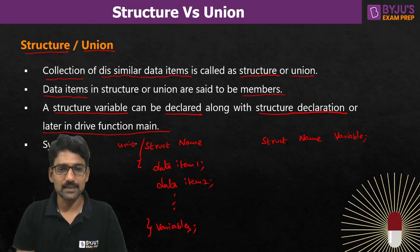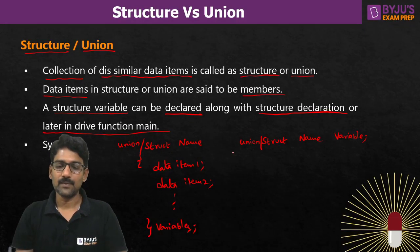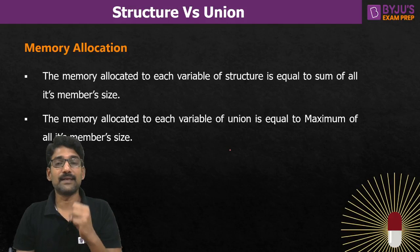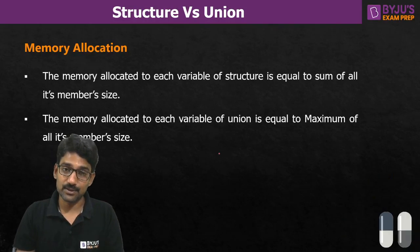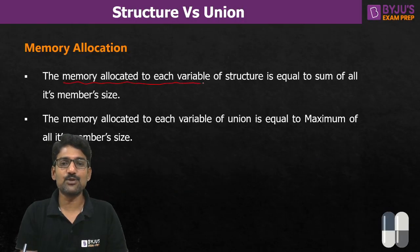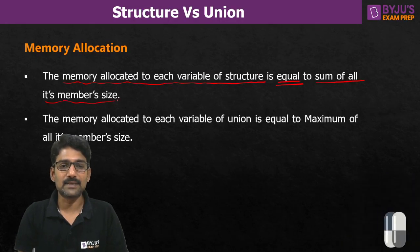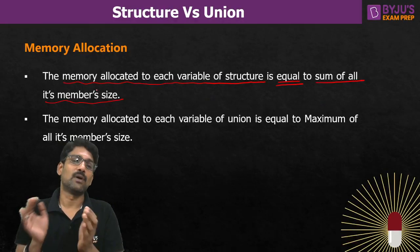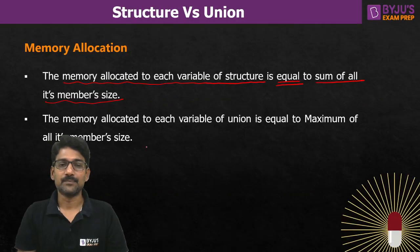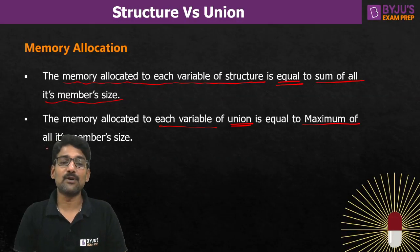The union declaration syntax is also the same except the keyword changes to 'union'. The major difference between structure and union lies in memory allocation. For a structure variable, the memory allocated is equal to the sum of all its members' sizes. For a union variable, the memory allocated is the maximum of all its members' sizes.